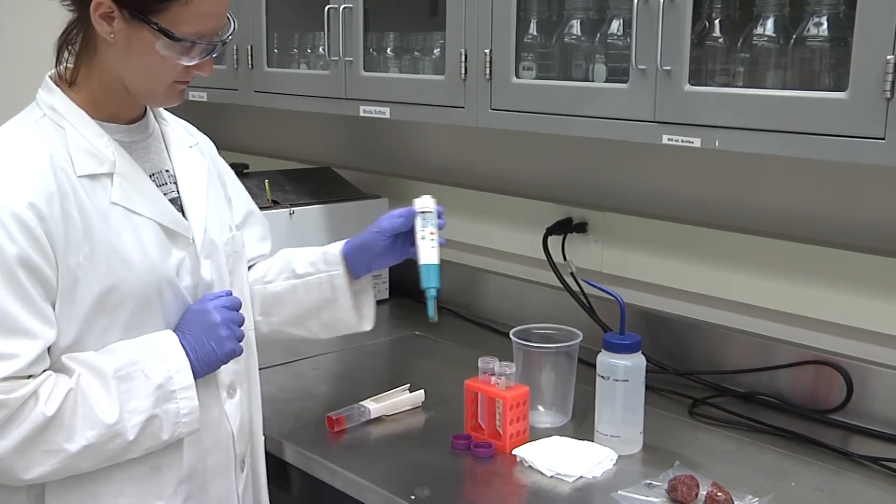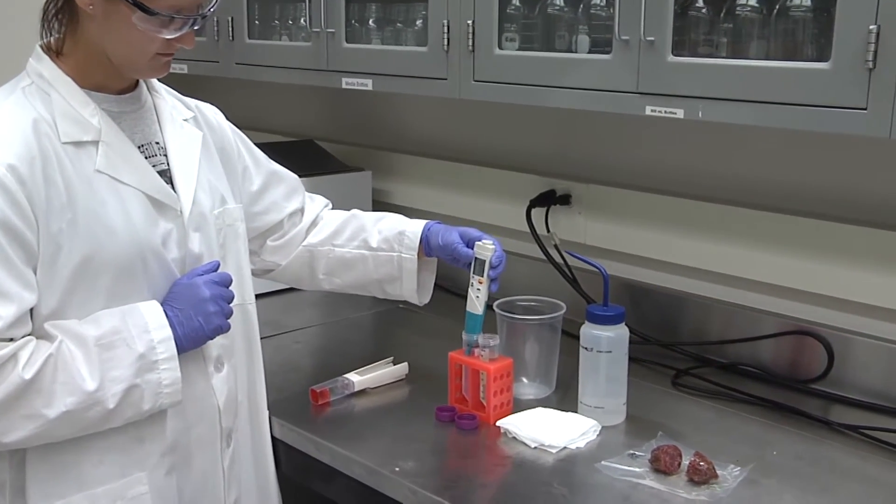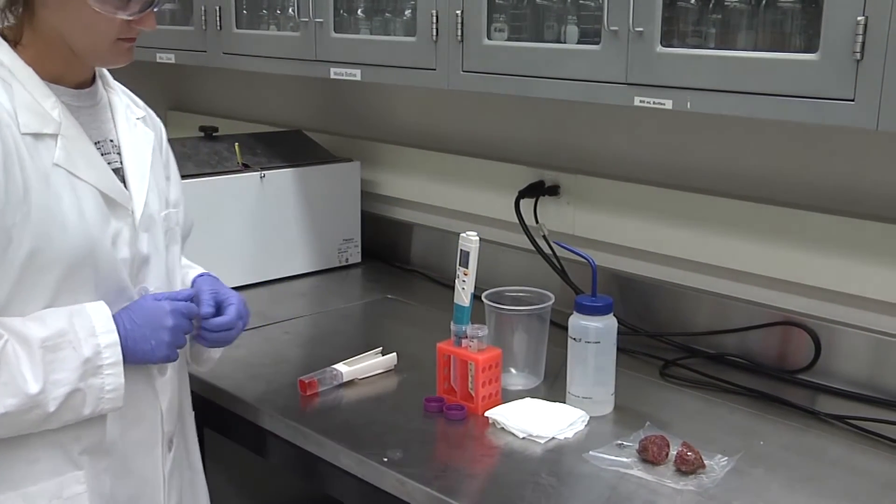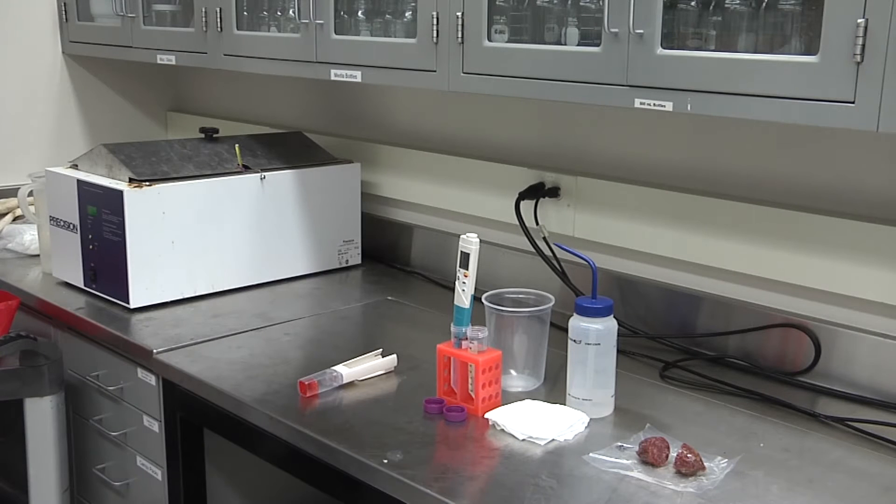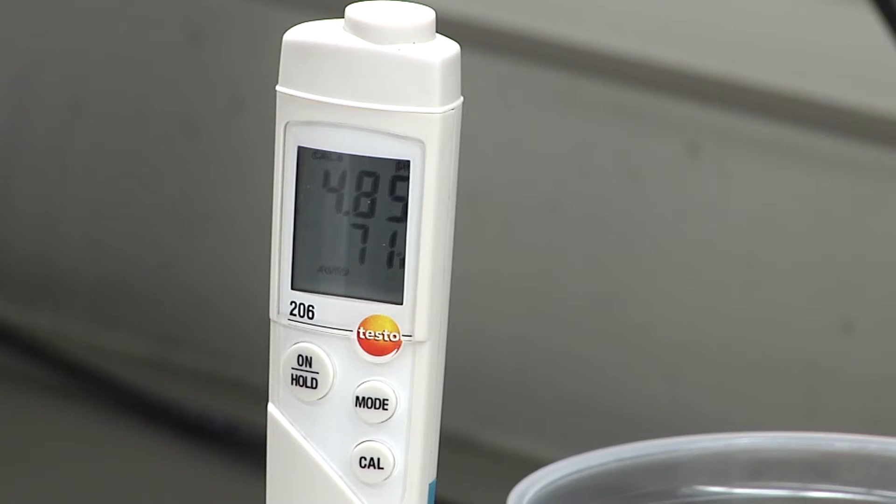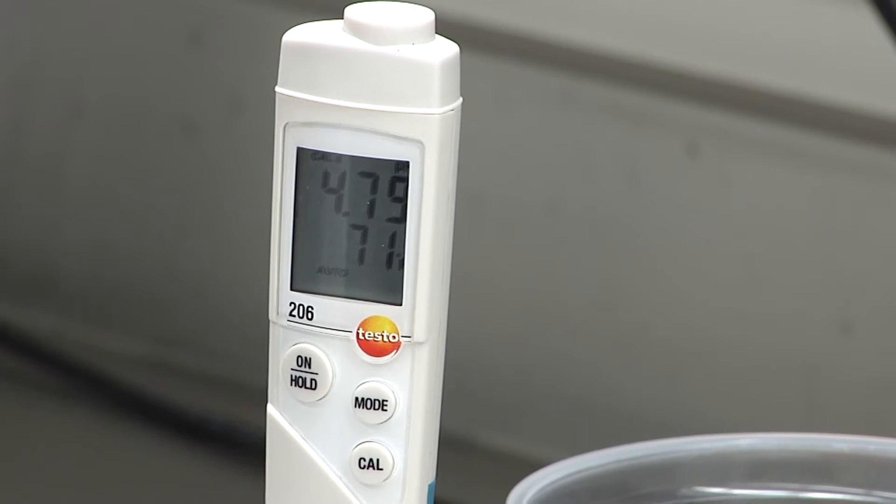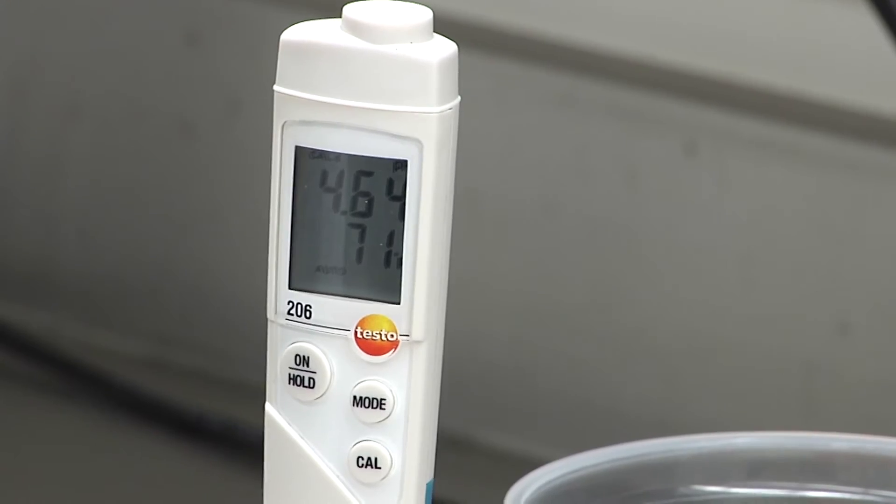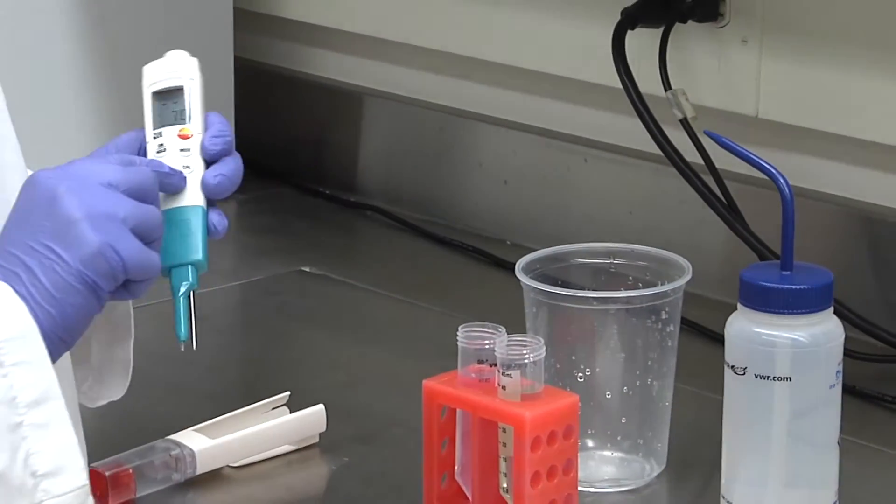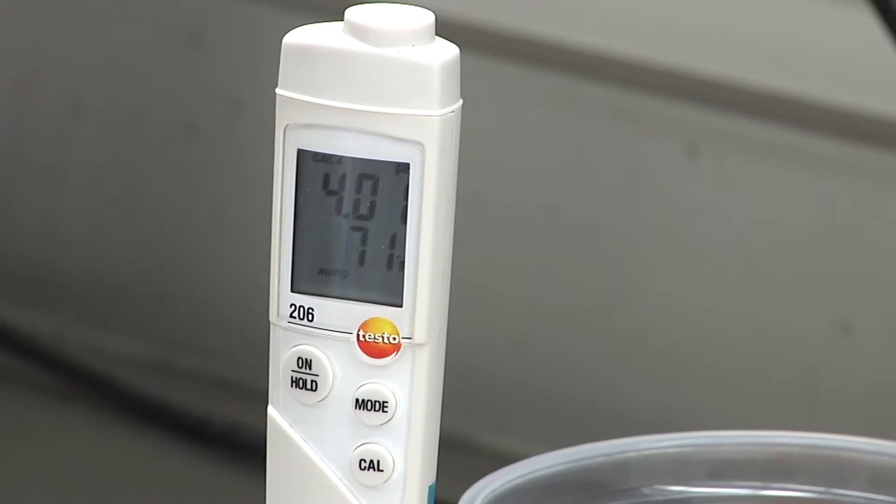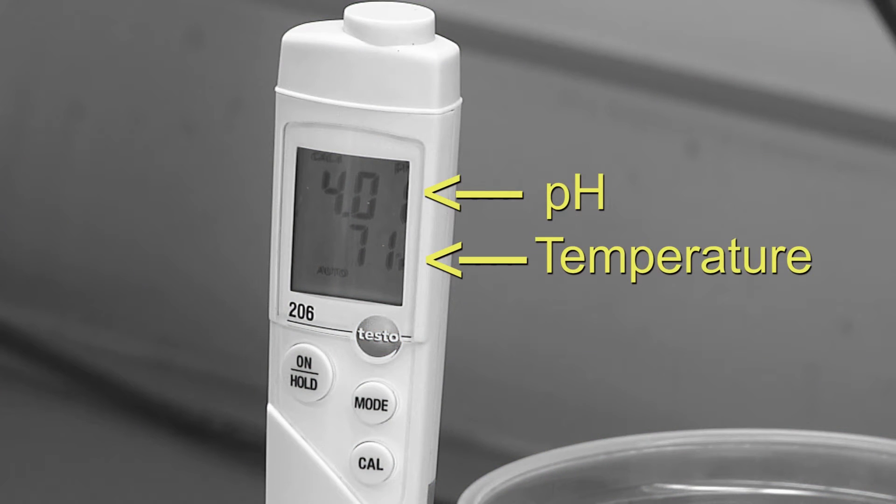Most pH meters have an automatic calibration function. As long as the automatic process continues through to completion, the results of the calibration will be more useful than trying to calibrate your apparatus manually. When calibrating your meter, be sure to use fresh buffers in the appropriate range for what you are measuring. Typically for meat products, the meter should be calibrated with pH buffers 4.01 and 7.00.